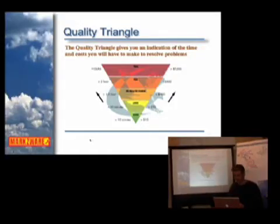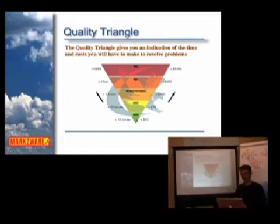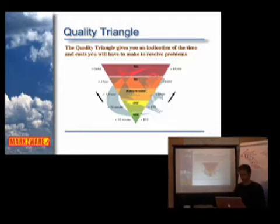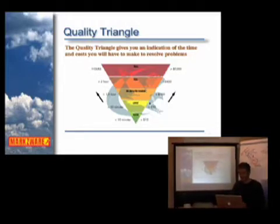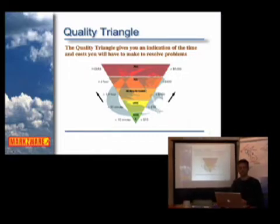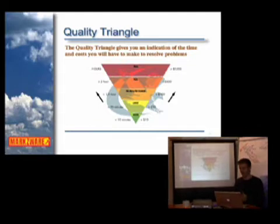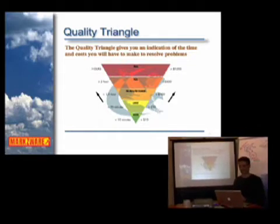As you can see here, the quality triangle is an upside down triangle that gives you all the stages of the document throughout the graphic arts workflow. Down at the bottom, we see the designer, and if the designer would take his time and check his file, and he would find a small error, he would be able to solve that error in less than 10 minutes, and will only cost him a couple of bucks.